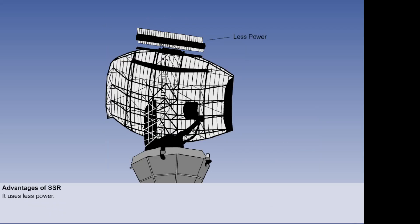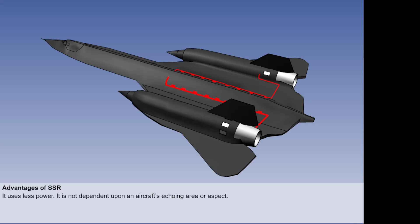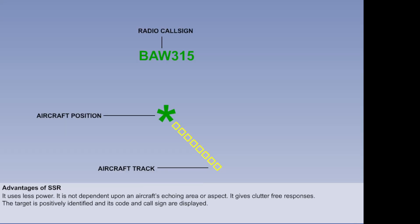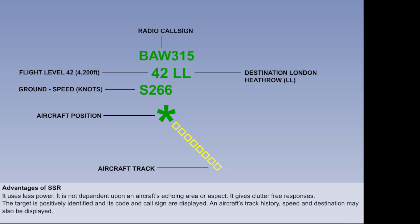SSR has the following advantages over primary radar. It requires much less transmitting power to provide coverage up to 200 nautical miles. It is not dependent upon an aircraft's echoing area or aspect. It gives clutter-free responses as it does not rely on returning reflected pulses. The target is positively identified and its code and call sign can be displayed. An aircraft's track history, speed and destination may also be displayed. If the aircraft has an emergency, has lost radio communications or is being hijacked, this fact can be displayed by special codes.